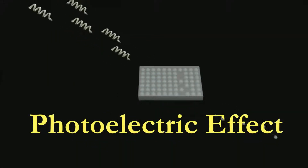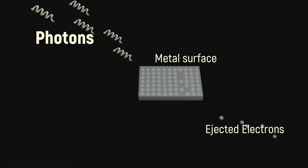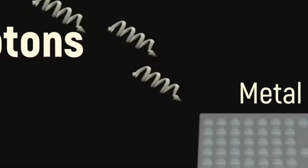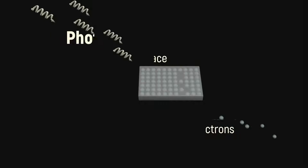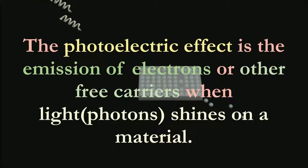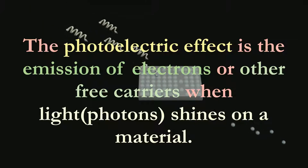In the photoelectric effect, we deal with the interaction of photons or light with the metal surface. When photons fall on the metal surface, it results in the ejection of electrons. The photoelectric effect can be defined as the emission of electrons or other free carriers when light photons shine on a material.